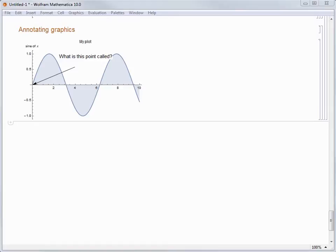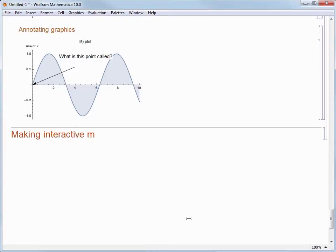So let's make another new section. I'm going to use Alt-4 to create this section cell and we'll call it Making Interactive Models. You could use any of the other methods to do that as well. I'm going to press the down arrow key to start a new input cell and I'm going to plot the graph of sine of x since we seem to be using that function a lot today.